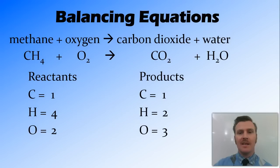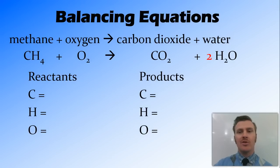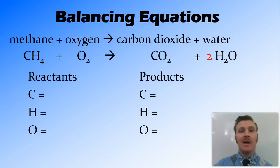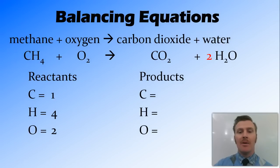To fix this, we put a coefficient of 2 at the front of the water. This means there are two water molecules. So on the product side we have one molecule of carbon dioxide and two molecules of water. Now that we've made this change, we recount both sides. The reactant side hasn't changed, so carbon is 1, hydrogen is 4, and oxygen is 2.